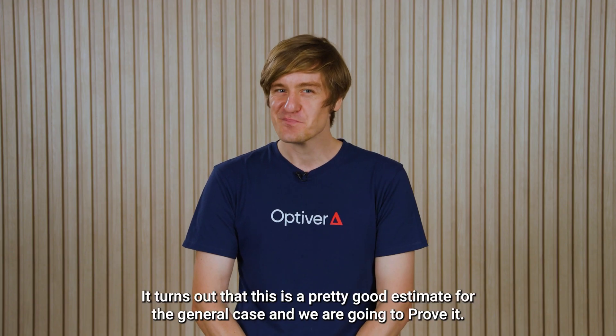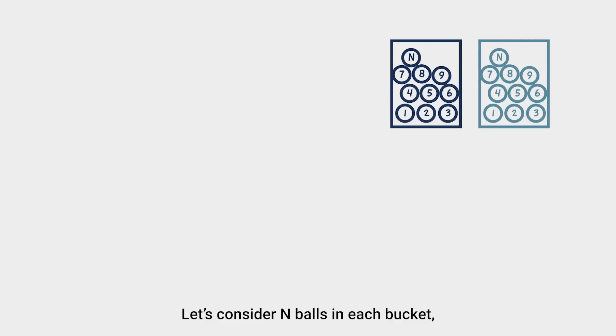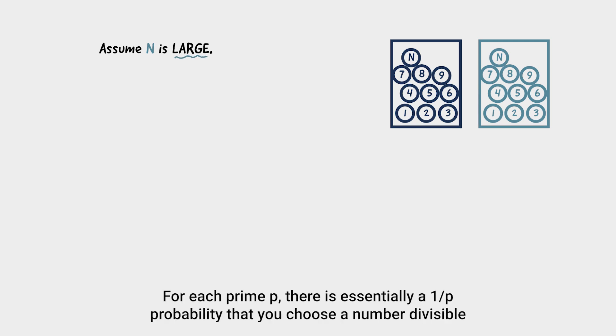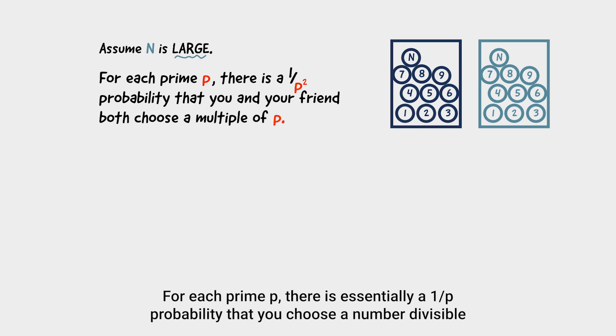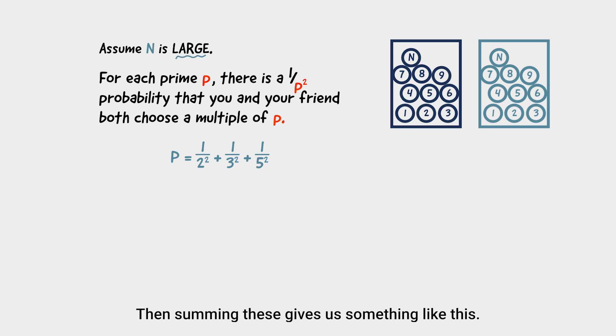It turns out that this is a pretty good estimate for the general case, and we're going to prove it. Let's consider n balls in each bucket. And to make things easy, let's assume that n is super duper large. And now, we reconstruct the argument we gave earlier. For each prime p, there is essentially a 1 on p probability that you choose a number divisible by p, and a 1 on p probability that your friend chooses a number divisible by p. Multiplying these together gives us 1 on p squared.